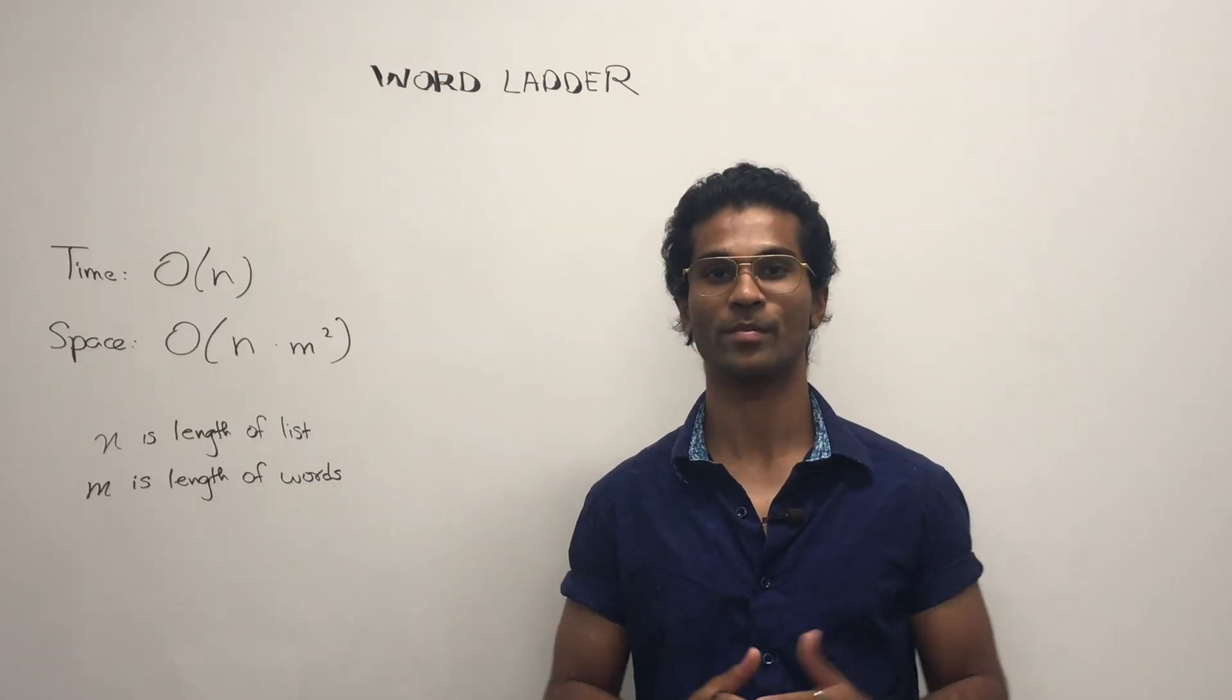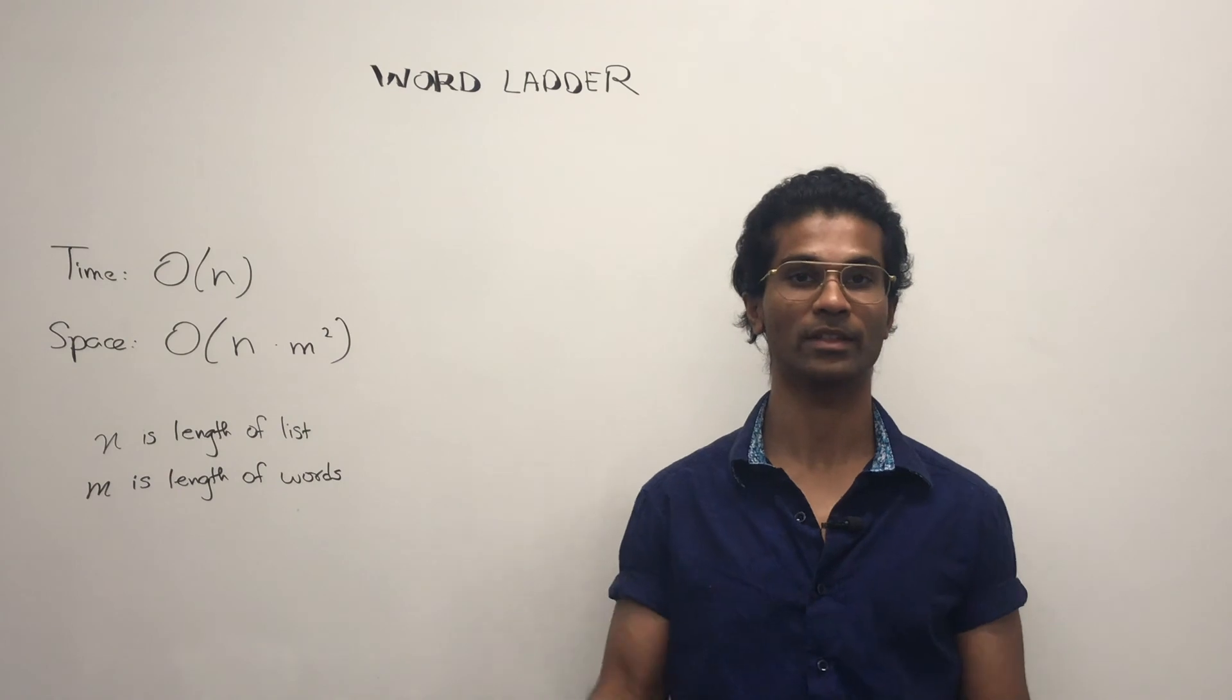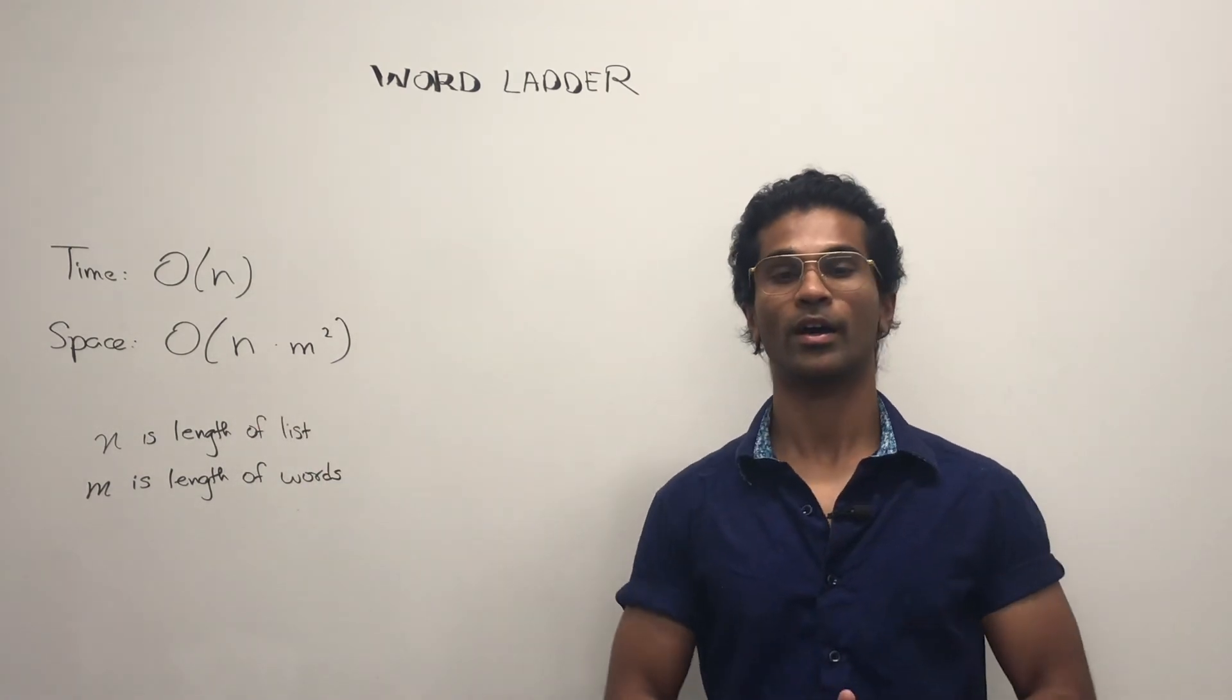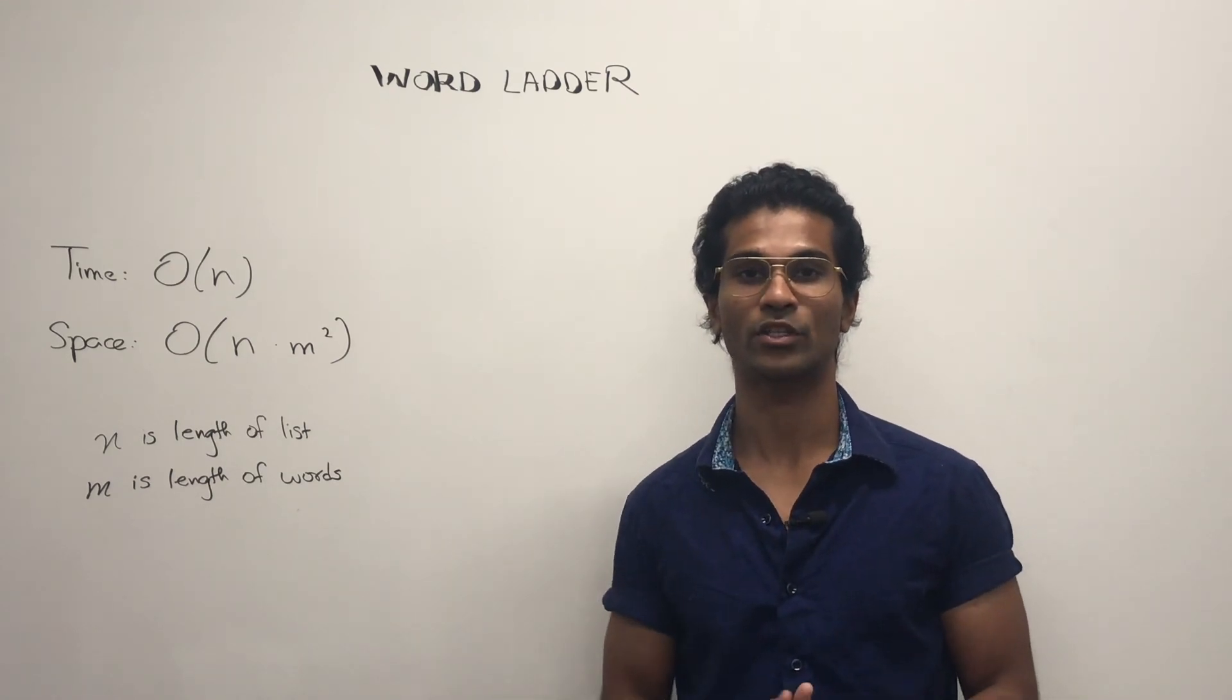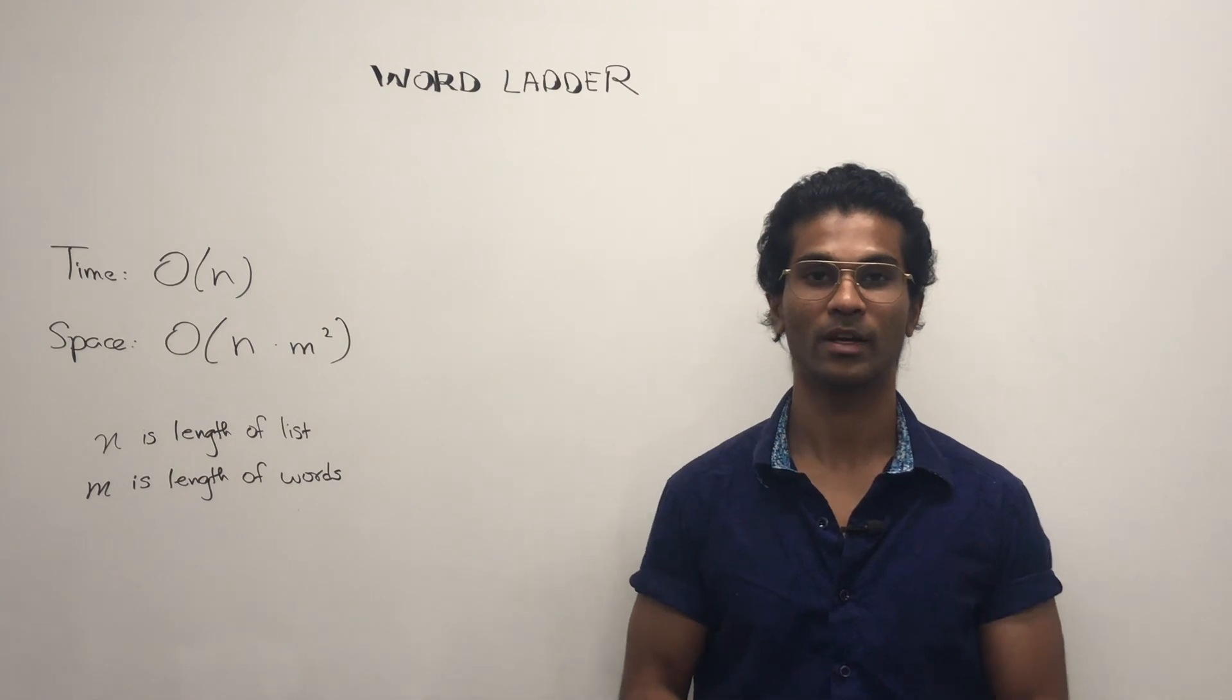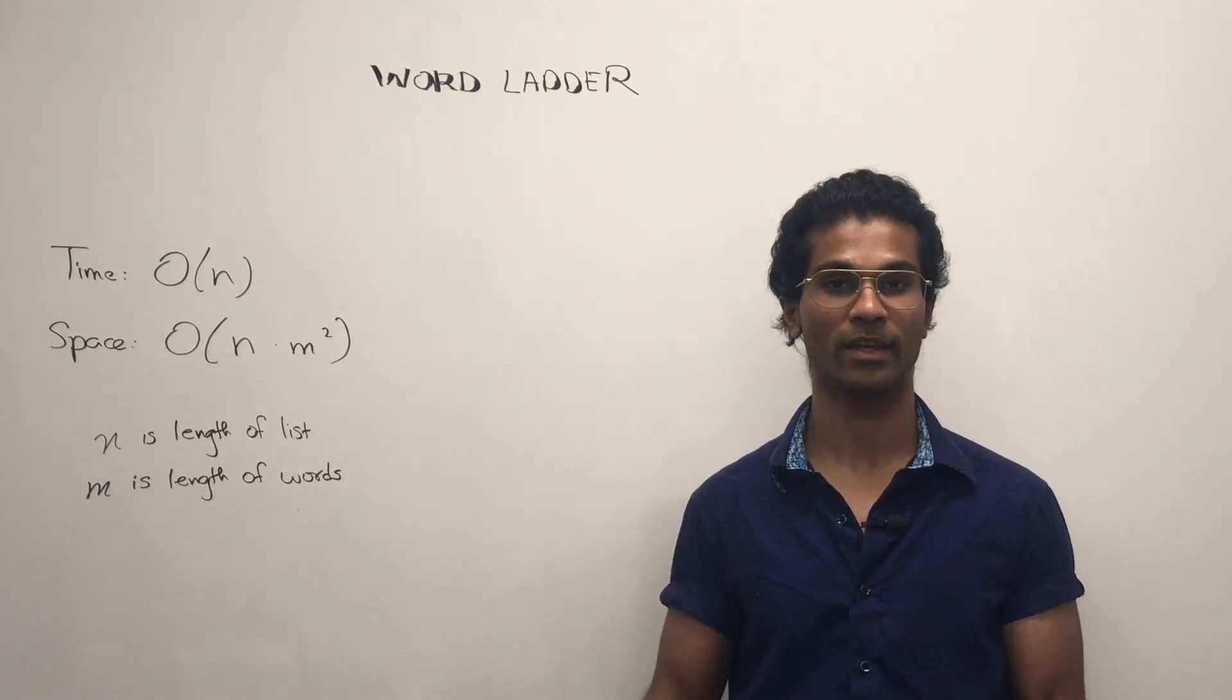The time complexity is going to be O(N) because in the worst case we might have to go through the entire given list. And the space complexity is going to be O(N * M²) because we can go through the entire list and store up to M² potential neighbors. N is going to be the length of the list and M is going to be the length of the words.